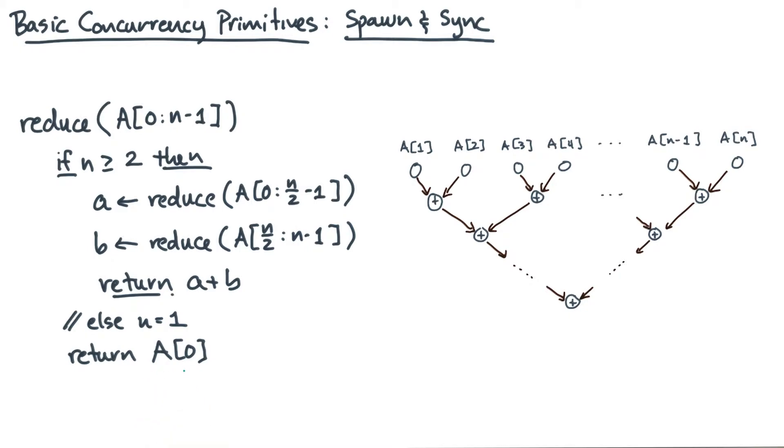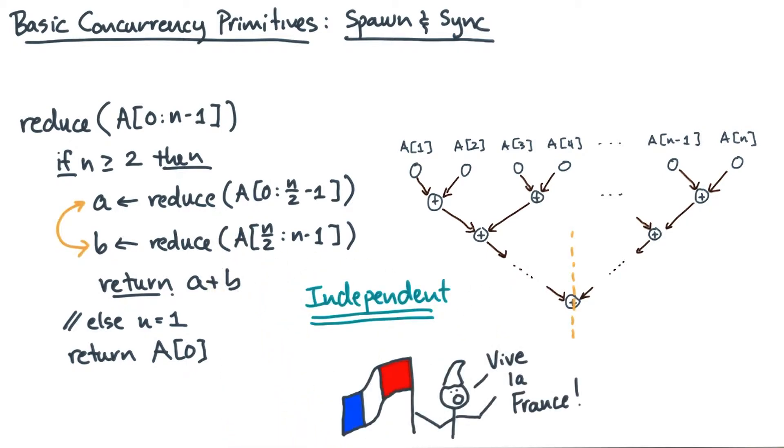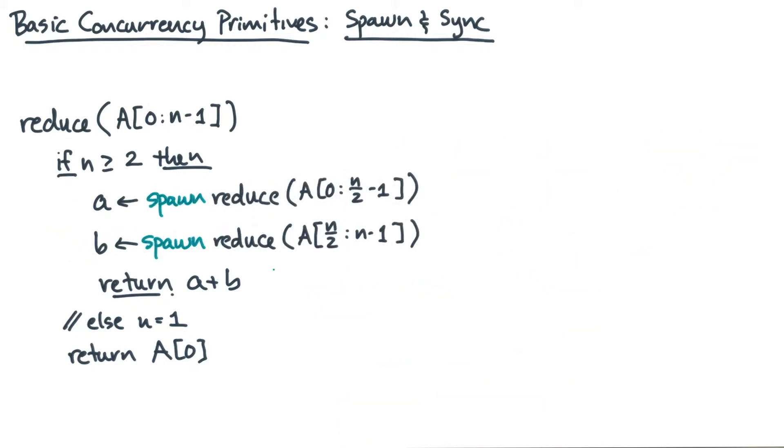Now, what you can observe is that the two recursive calls are independent of one another. Since the two recursive function calls are independent, I'm going to give you a special keyword to mark that fact. That keyword is called spawn. The target of a spawn is always either a function call or a procedure call. In this case, I'm showing a function call.